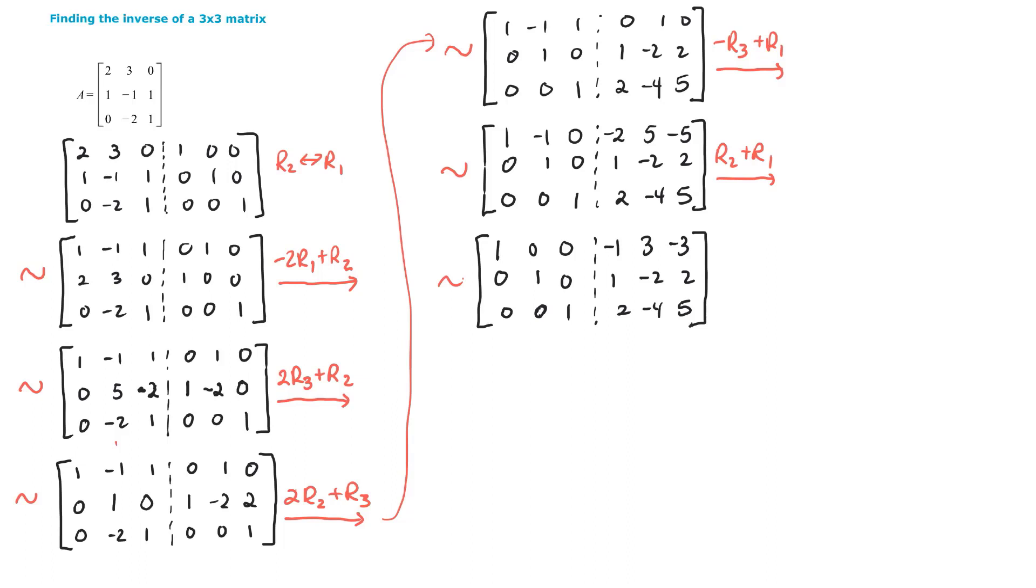Okay. So it looks like we do have the identity now augmented with that matrix B. Well, instead of calling it matrix B, we're going to go ahead and name it the inverse of A. So the inverse of A is negative 1, 3, negative 3, 1, negative 2, 2, and then 2, negative 4, 5. Notice the inverse of A is also a 3 by 3 matrix.